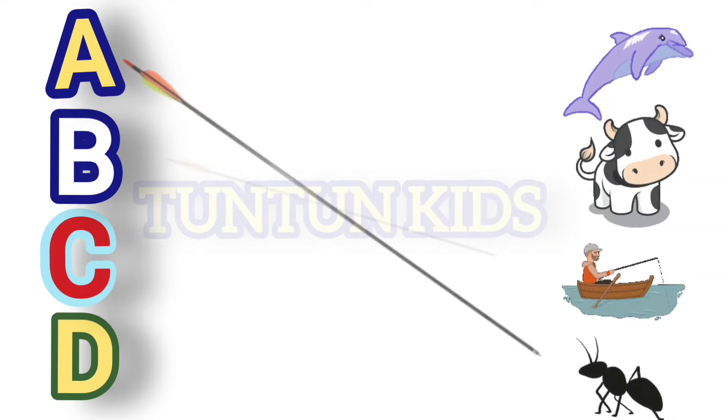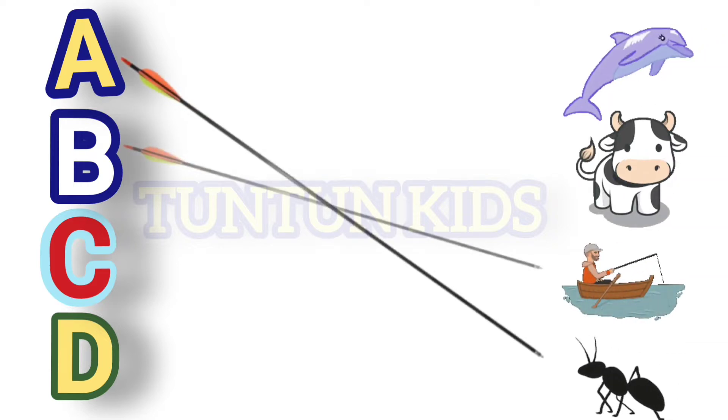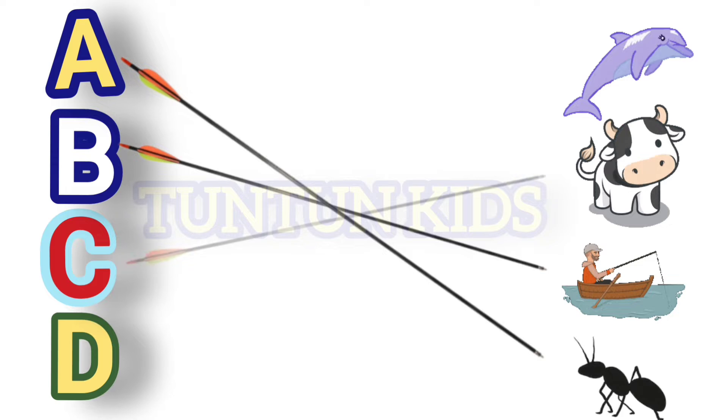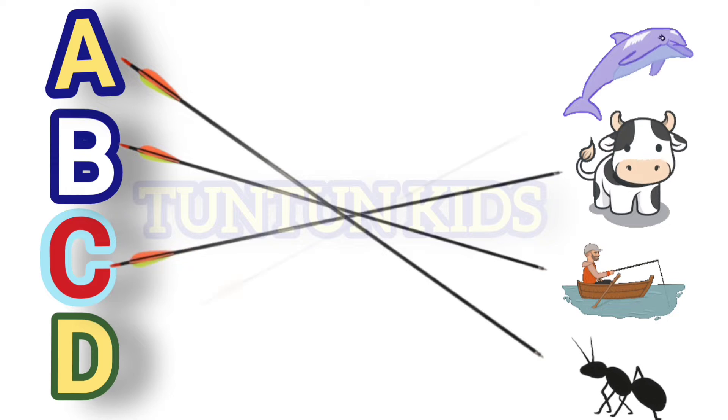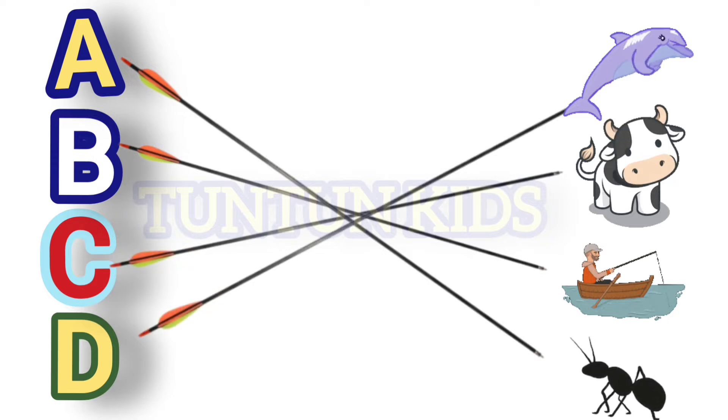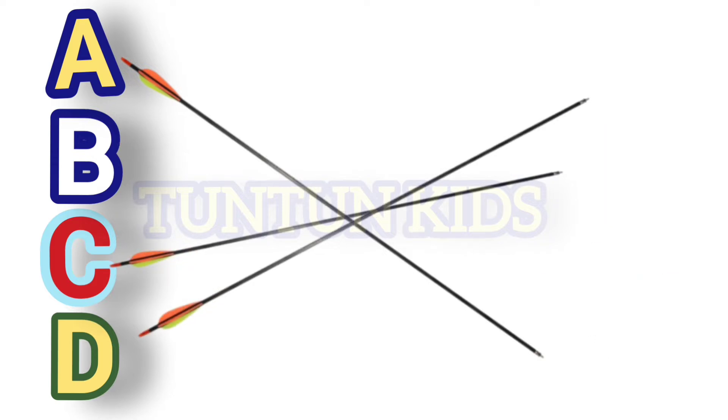A for Ant, B for Boat, C for Cow, D for Dolphin.